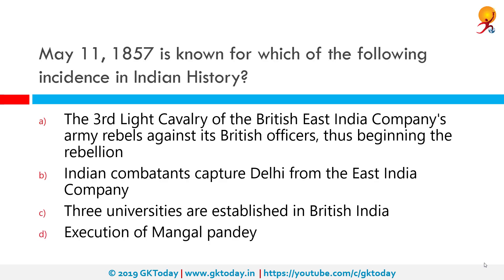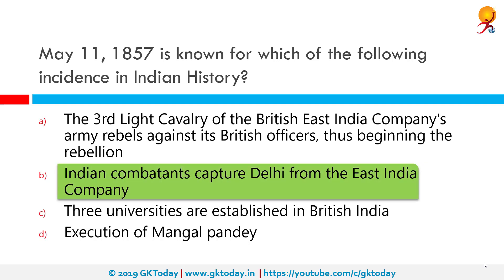May 11, 1857 is known for which of the following incidents in Indian history? The correct answer is: Indian combatants captured Delhi from the East India Company. This is from the revolt of 1857, which began on 10th May 1857 at Meerut, otherwise known as the Sepoy Mutiny — a mutiny of sepoys of the British East India Company's army.